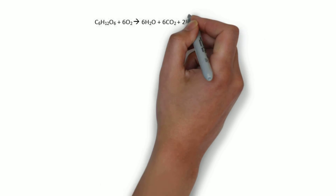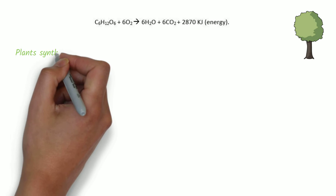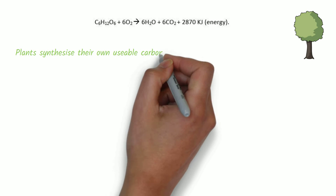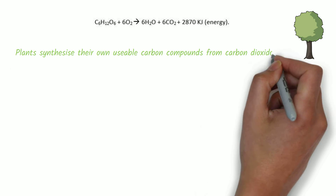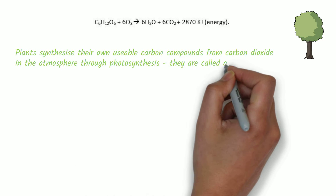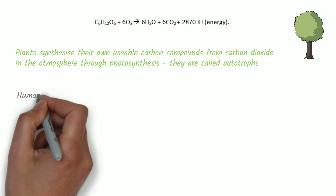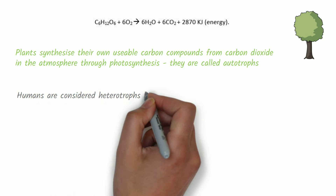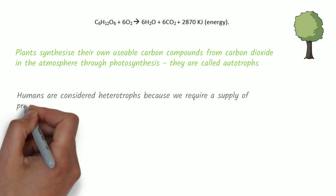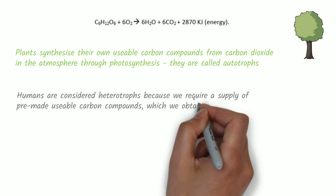This is the equation for respiration. Some organisms, such as plants, synthesise their own usable carbon compounds from carbon dioxide in the atmosphere through photosynthesis. These organisms are called autotrophs. Humans are considered heterotrophs because we require a supply of pre-made usable carbon compounds which we obtain from food.